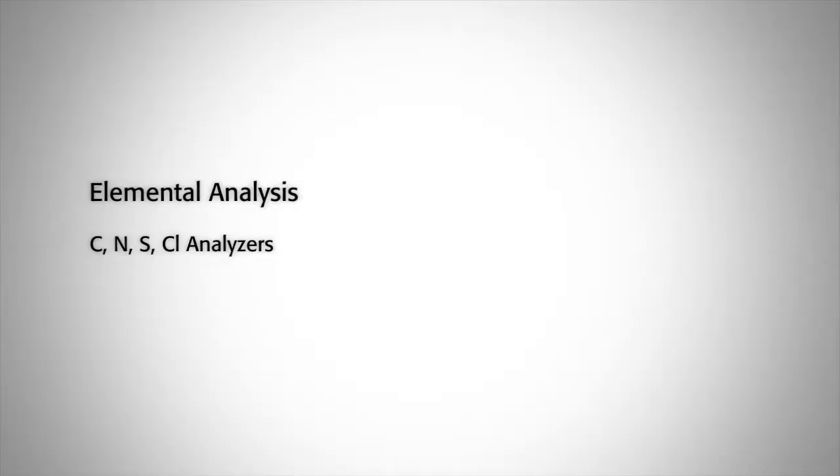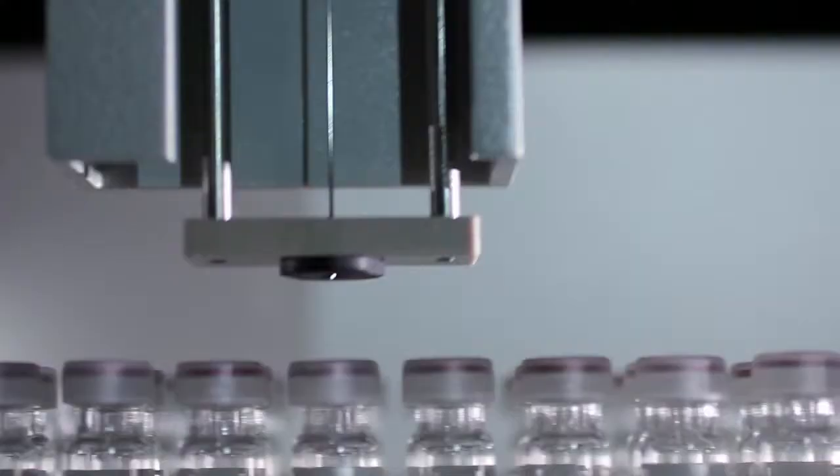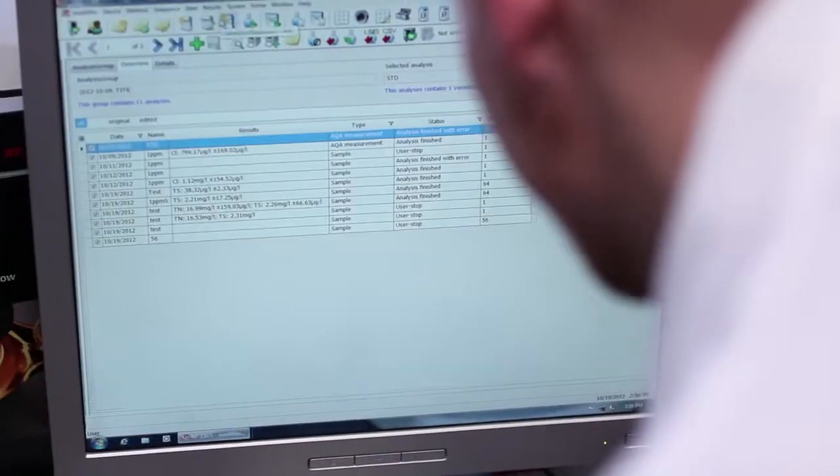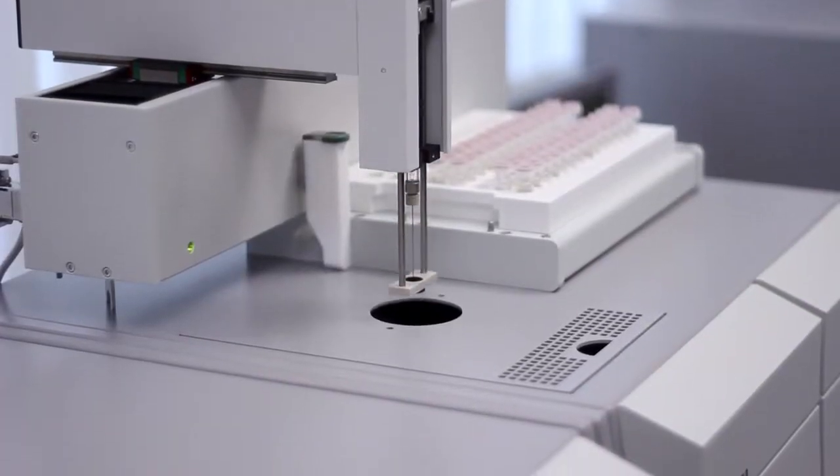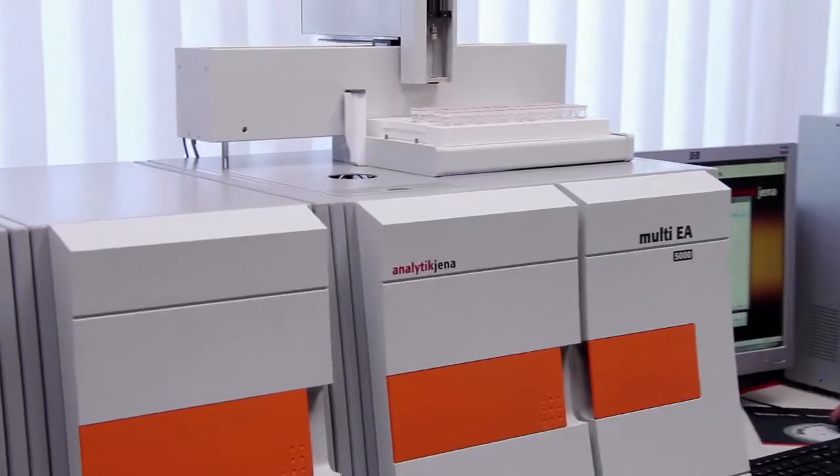Multi EA 5000 was particularly designed for petrochemical applications. It is a real multi-matrix analyzer capable to detect carbon, sulfur, nitrogen and chlorine in liquids, solids, gases and LPG samples. Progressive technologies like double furnace and flame sensor control combustion guarantee convenient operations and always best results.